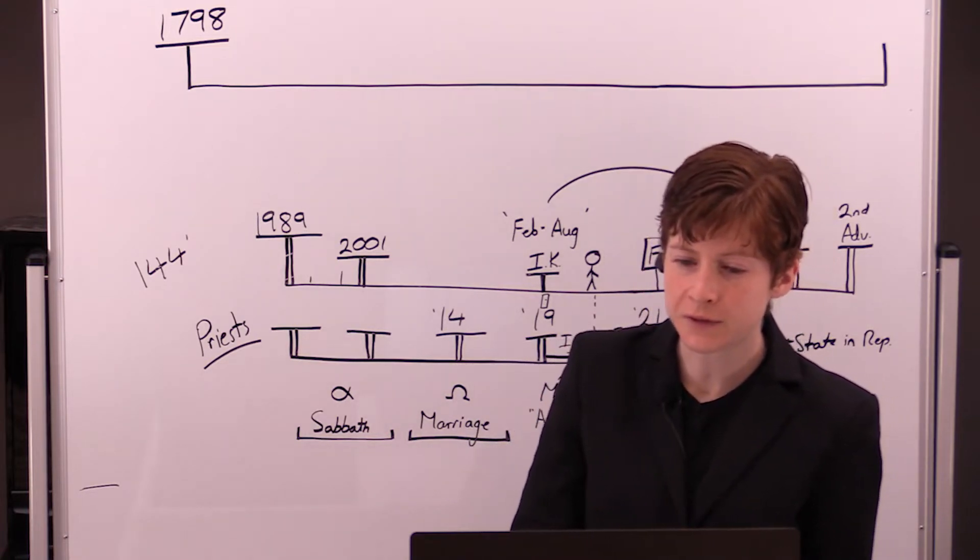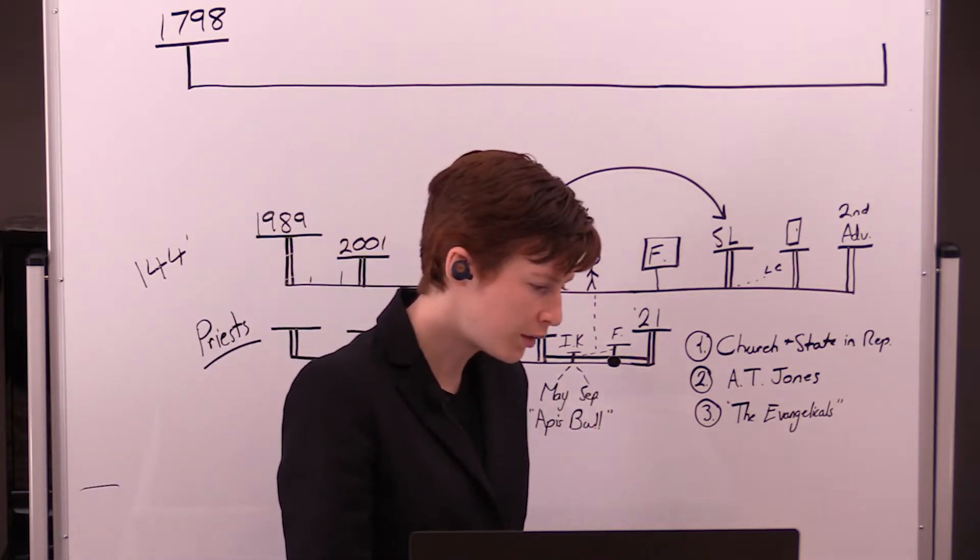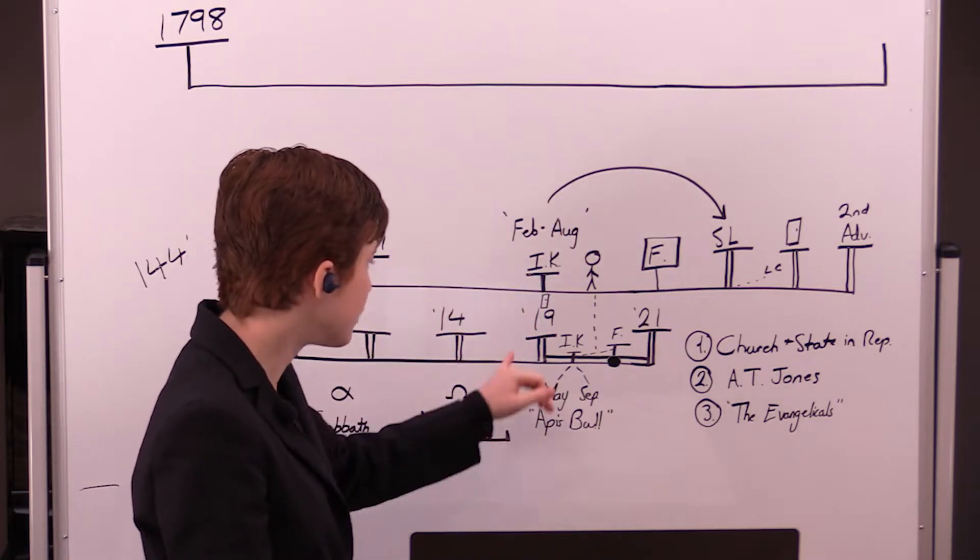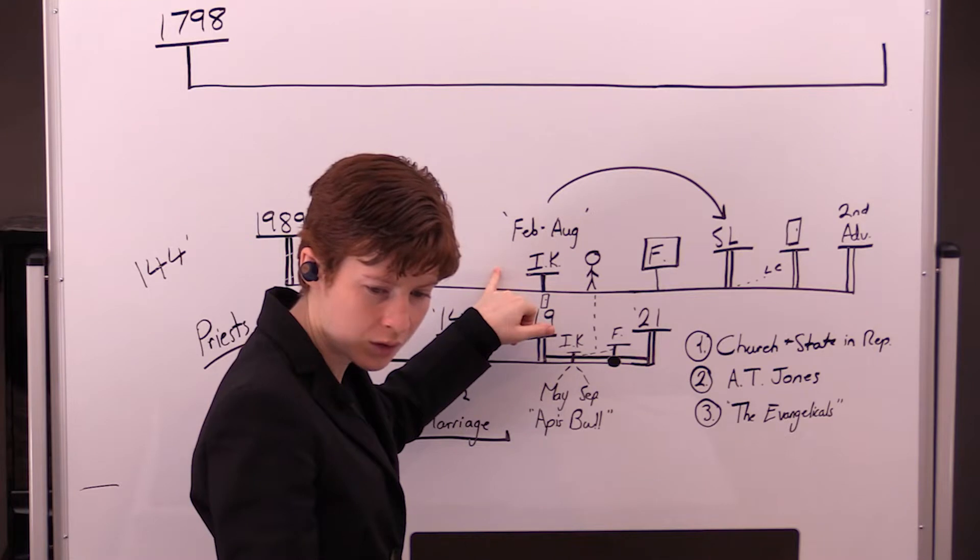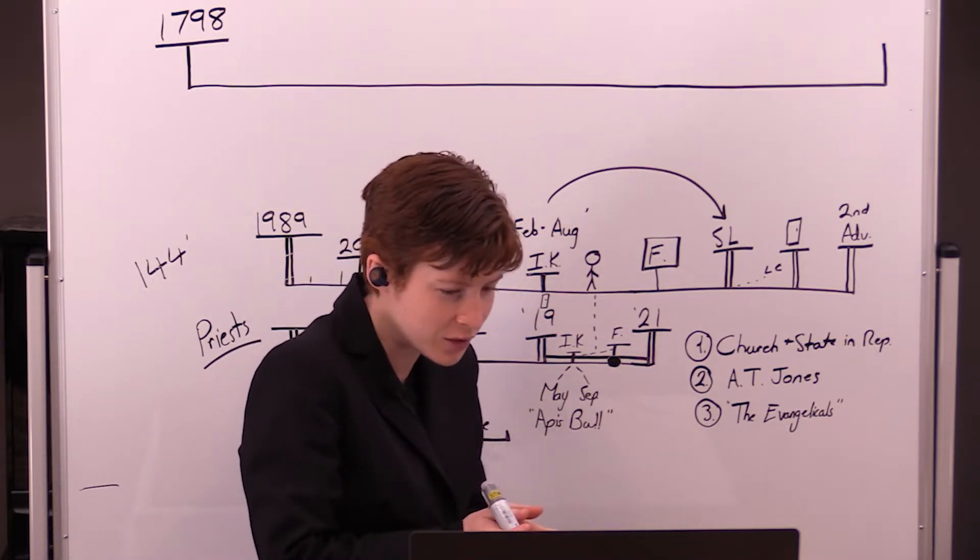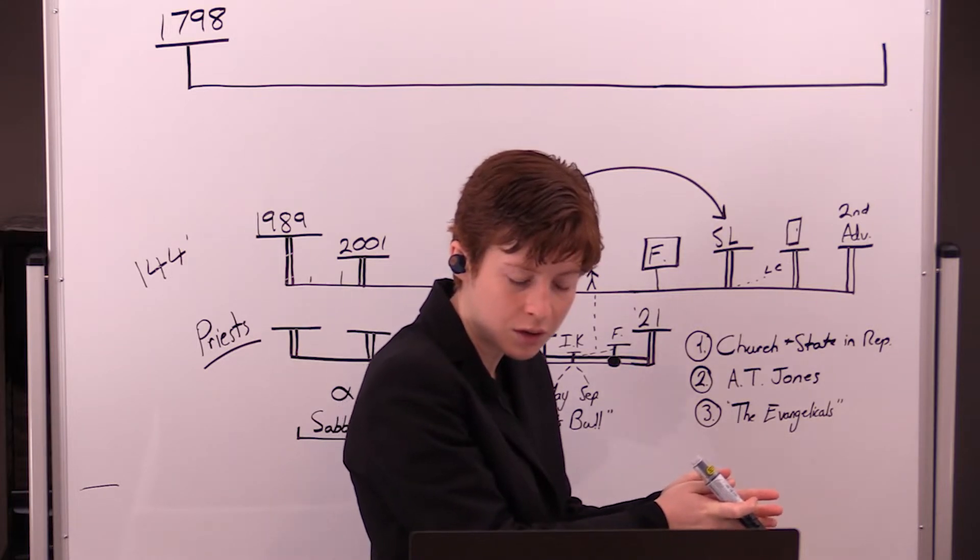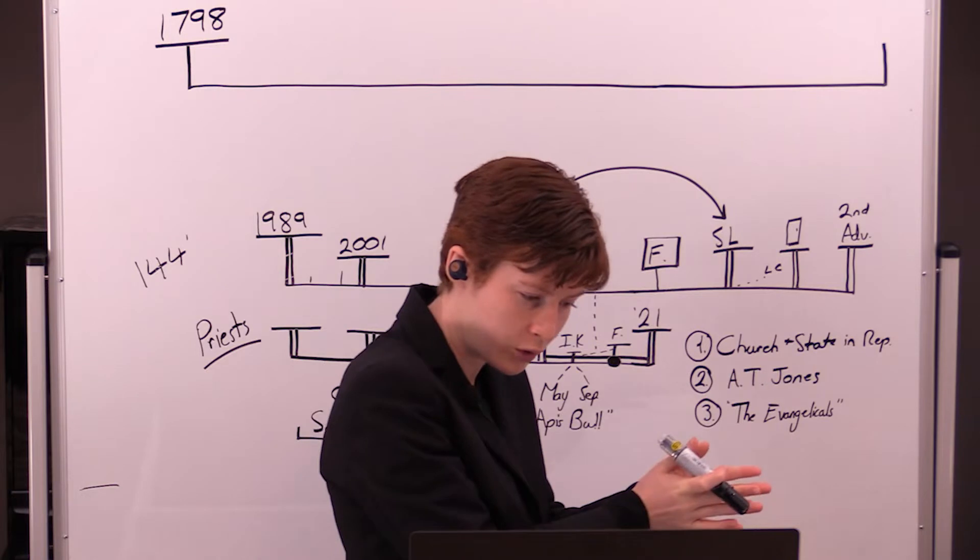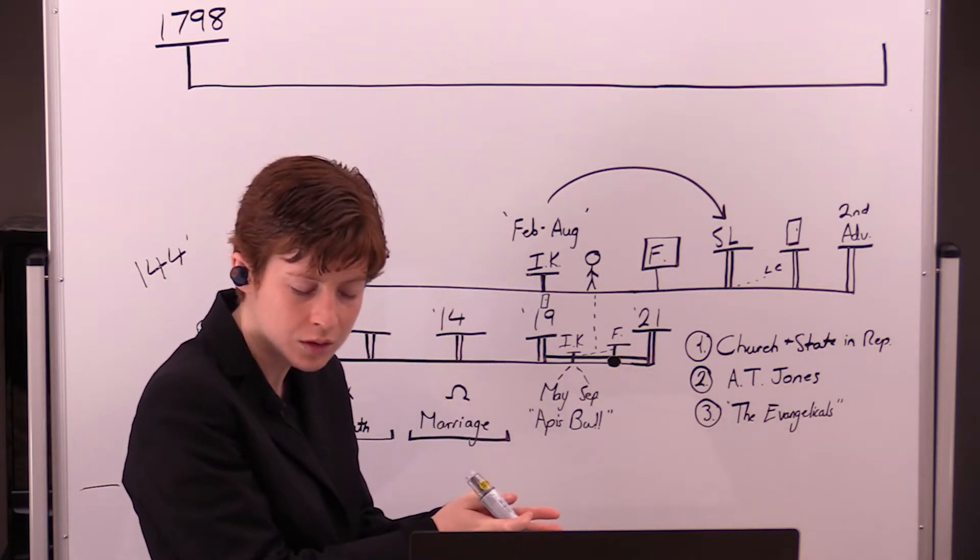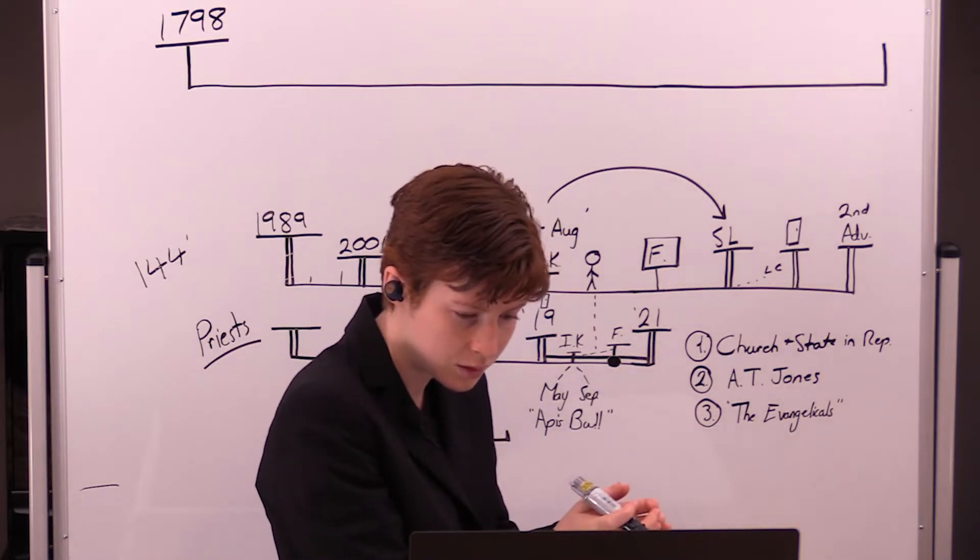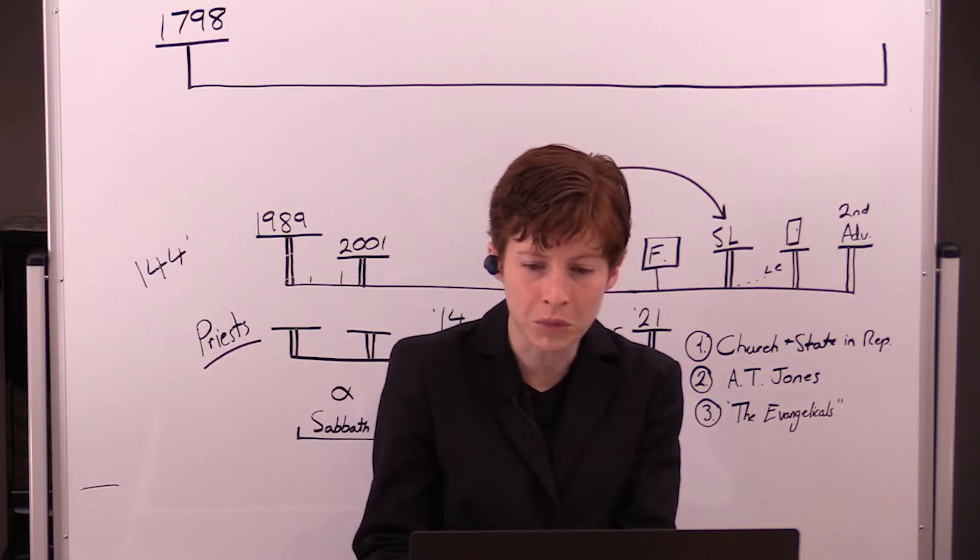And the litmus test was 2015 gay marriage. So it started in 2019 with the 1888 history. God entered that entering wedge of you don't understand 1888 itself. He's saying to his people, you don't understand how church and state works. And then by August, he's shown us we'd forgotten Millerite history.